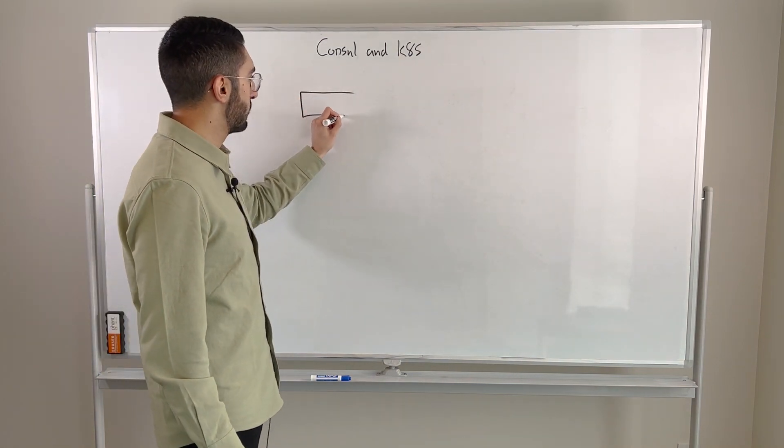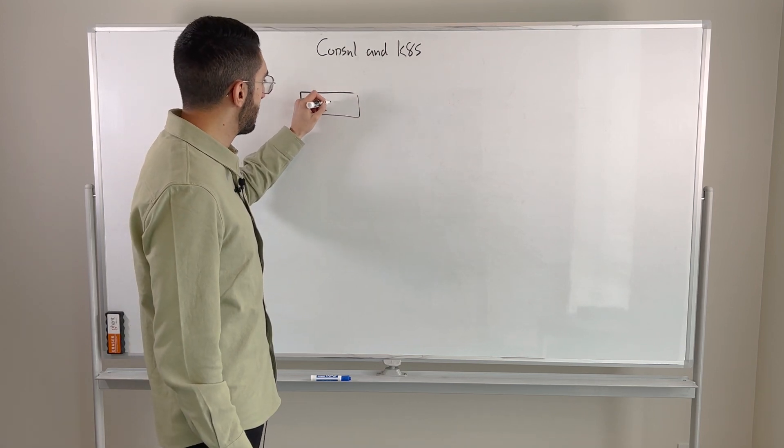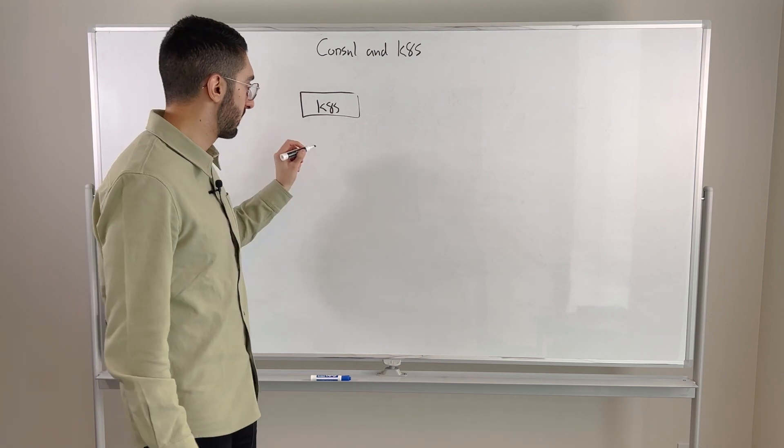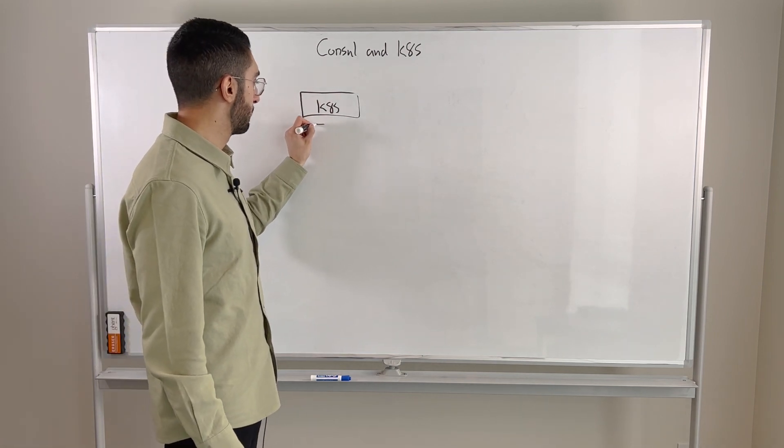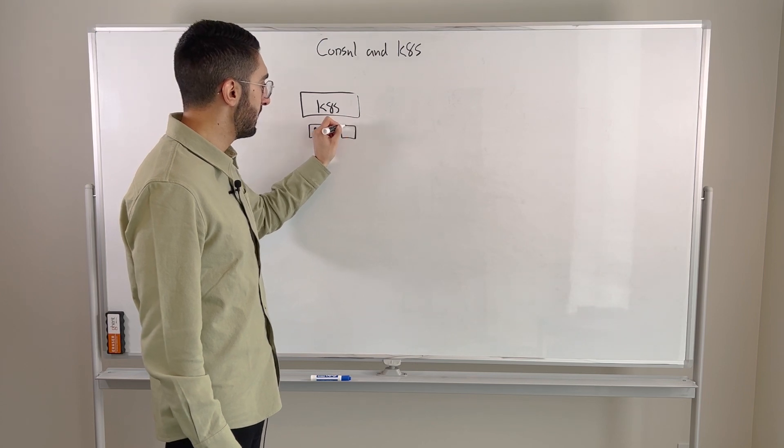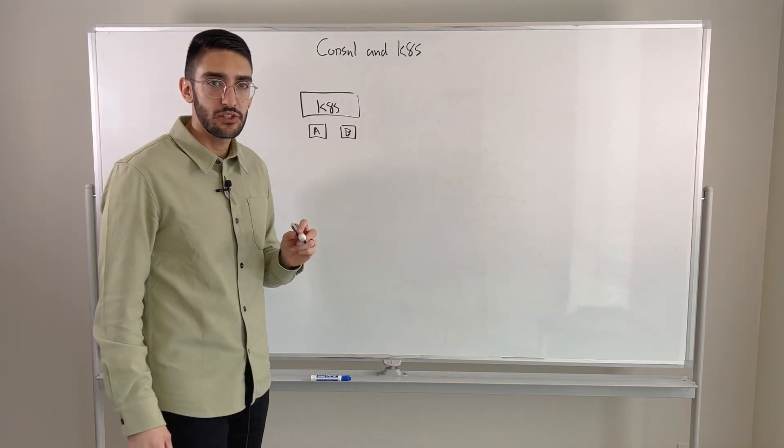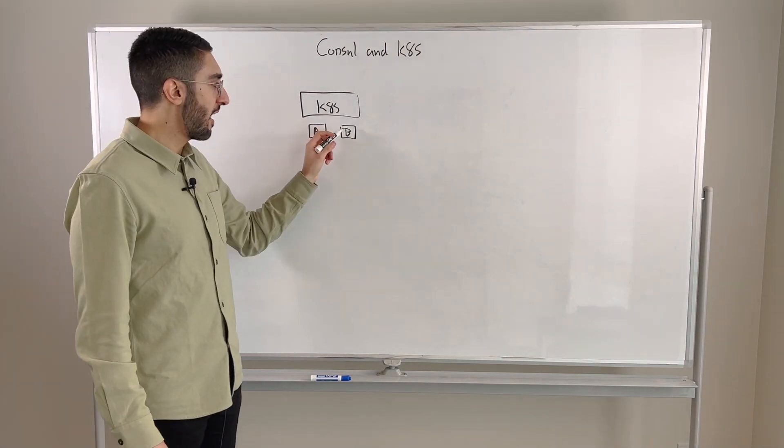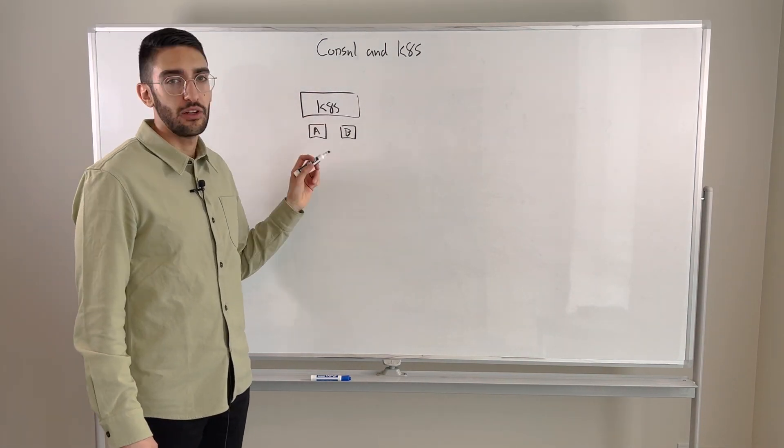If we start by talking about Kubernetes, yes, at the core Kubernetes does include a basic form of service discovery within any given cluster. So if I have a single Kubernetes cluster and I have applications A and B running within that cluster, then they can use Kubernetes' native DNS-based service discovery to find and route to one another within that cluster.